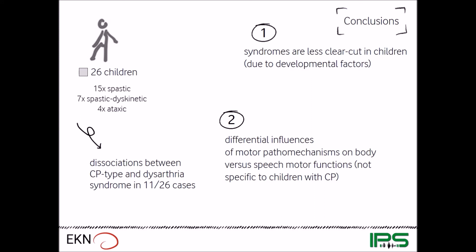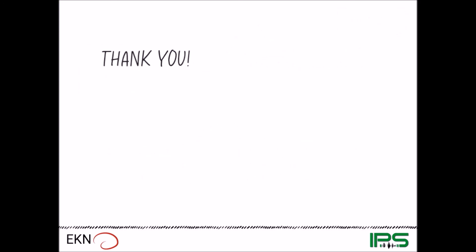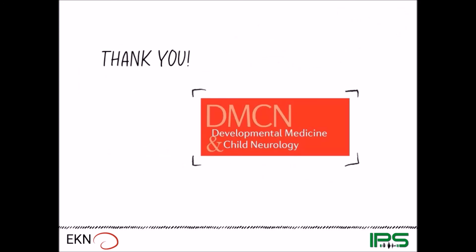We also find these sorts of dissociations in adults with CP but also in adults with other etiologies. Therefore, while developmental age seems to be highly relevant and should be considered in assessment and treatment of childhood dysarthria accordingly, there was only little evidence that early brain damage — that is, the age of acquisition — plays a major role in the manifestation of childhood dysarthria. Thanks very much first to DMCN for this opportunity to present our study, and thank you also for your interest in our work.